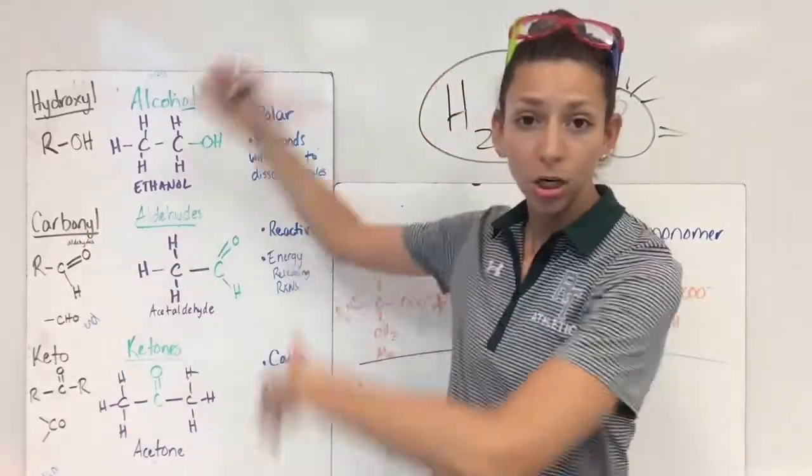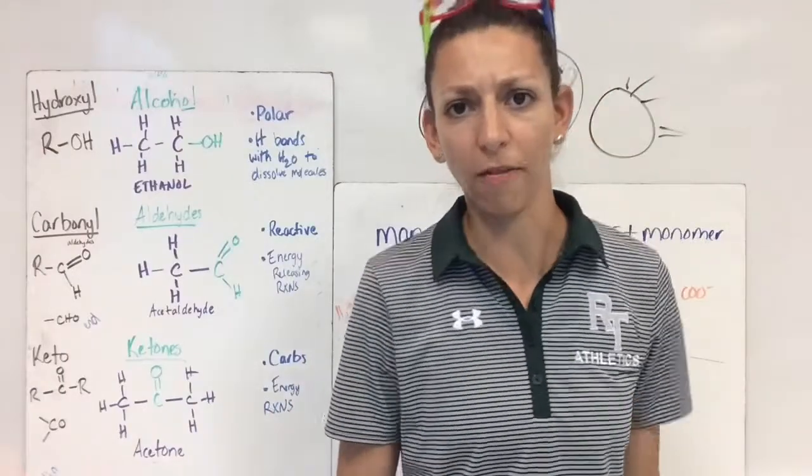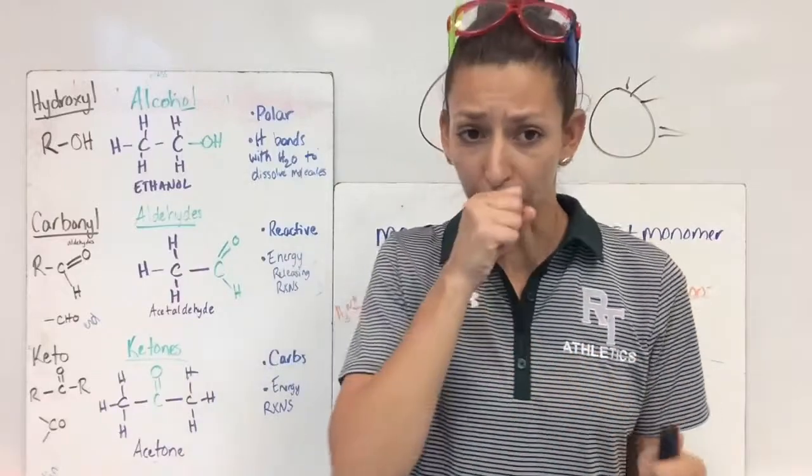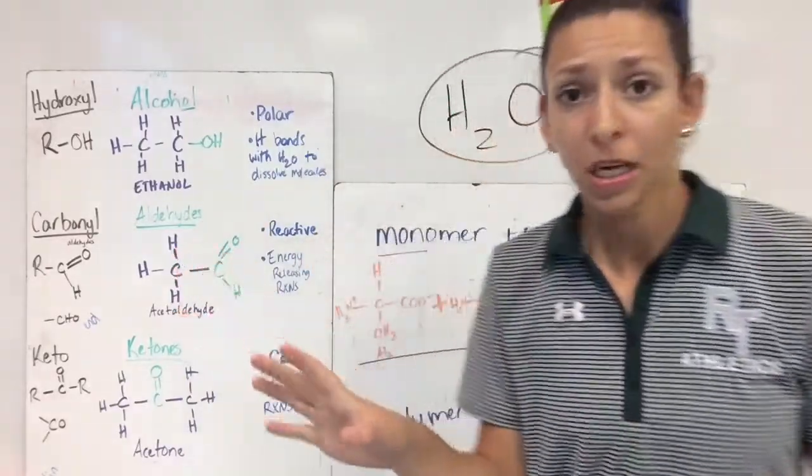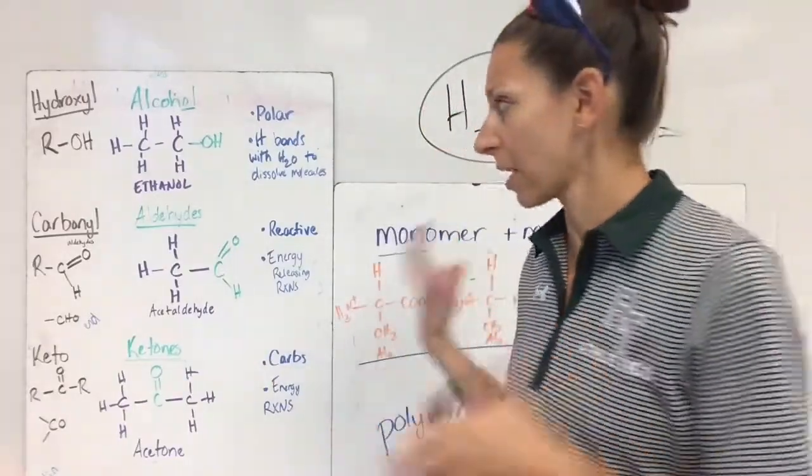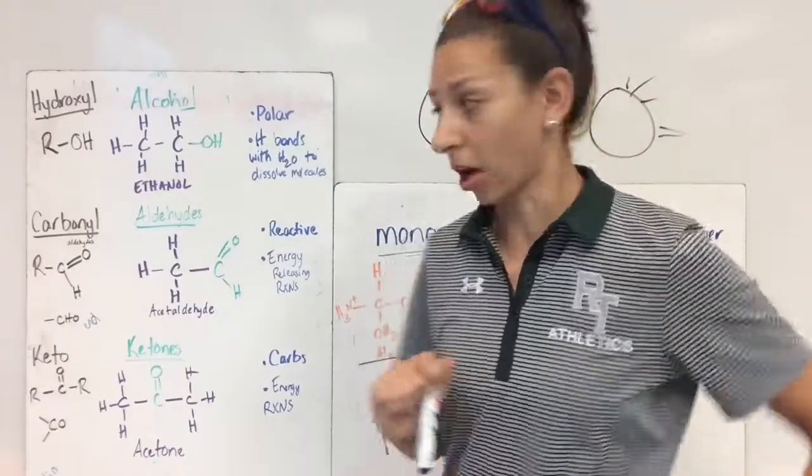So our functional groups are starting over here. You'll see them in your book as well. Depending on what list you look at, you may have a different list, but these are some of the main ones that are really important. Now, when we look at these functional groups, we should be able to look at them right off the bat and recognize some of their characteristics, but right now I just want you to sort of look at their structure for today and jot down the things that we talk about.